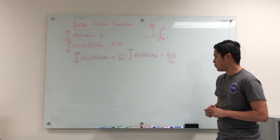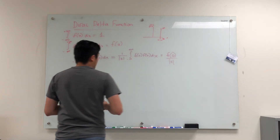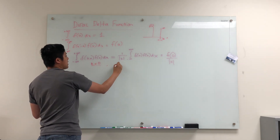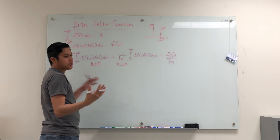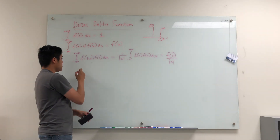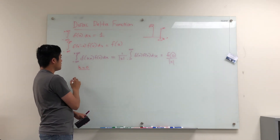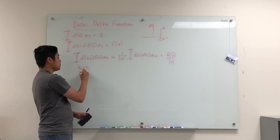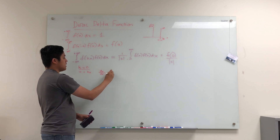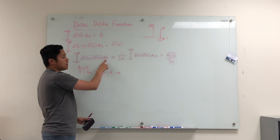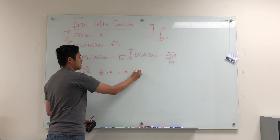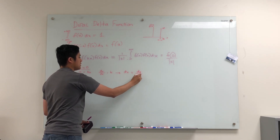This is going to be the proof we're going to try and accomplish. We have to consider two cases: the k less than 0 case and the k greater than 0 case. First, I'm going to consider the k greater than 0 case. If we have k greater than 0, then if we make the u substitution u is equal to kx, we'll have du/dx is equal to k. And with some rearrangement, if we solve for dx in this integral, we'll find that dx is equal to du divided by k.